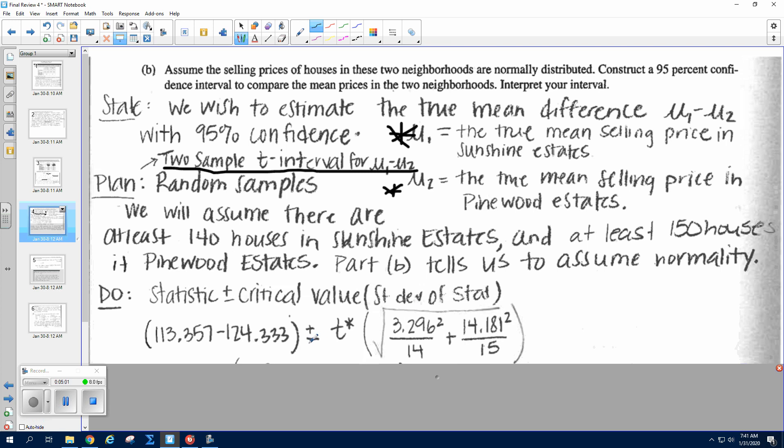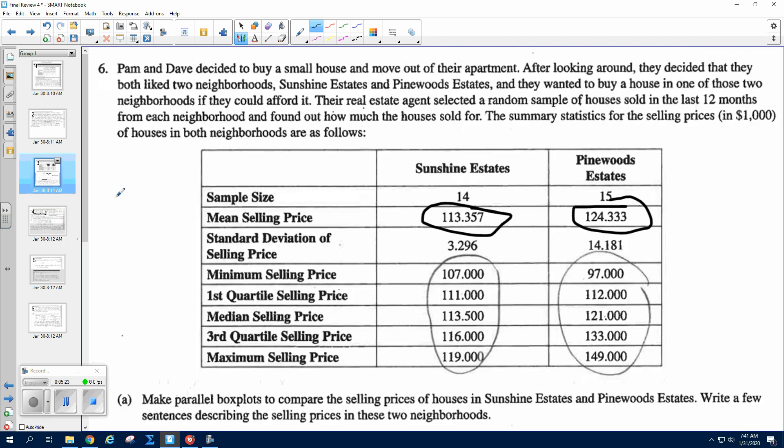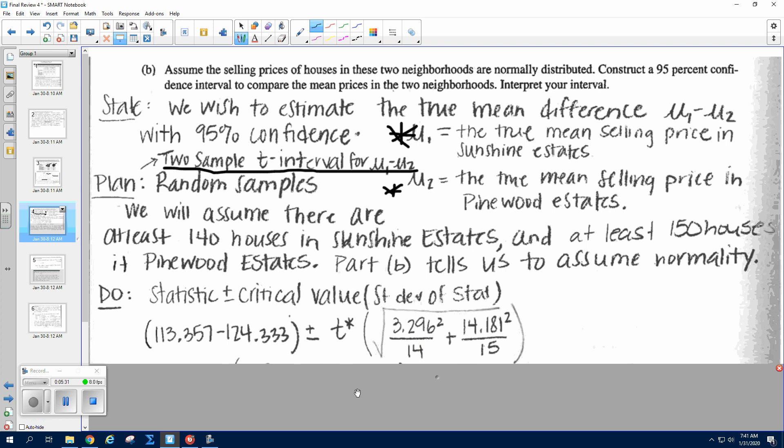And again, this information comes from just right here, our mean. So I'm doing Sunshine Estates minus Pinewood Estates, okay? Plus or minus t* is difficult to find. We don't really know degrees of freedom, which is why we run the test first and then state the degrees of freedom. And we don't really need to find t*, just put t*. All right, again, t's go with means. All right, then this formula is on your yellow sheet right here. We don't know σ, so we use the standard deviation from the sample, so these two right here, and our sample sizes go in the denominator of that formula, so it looks like that.